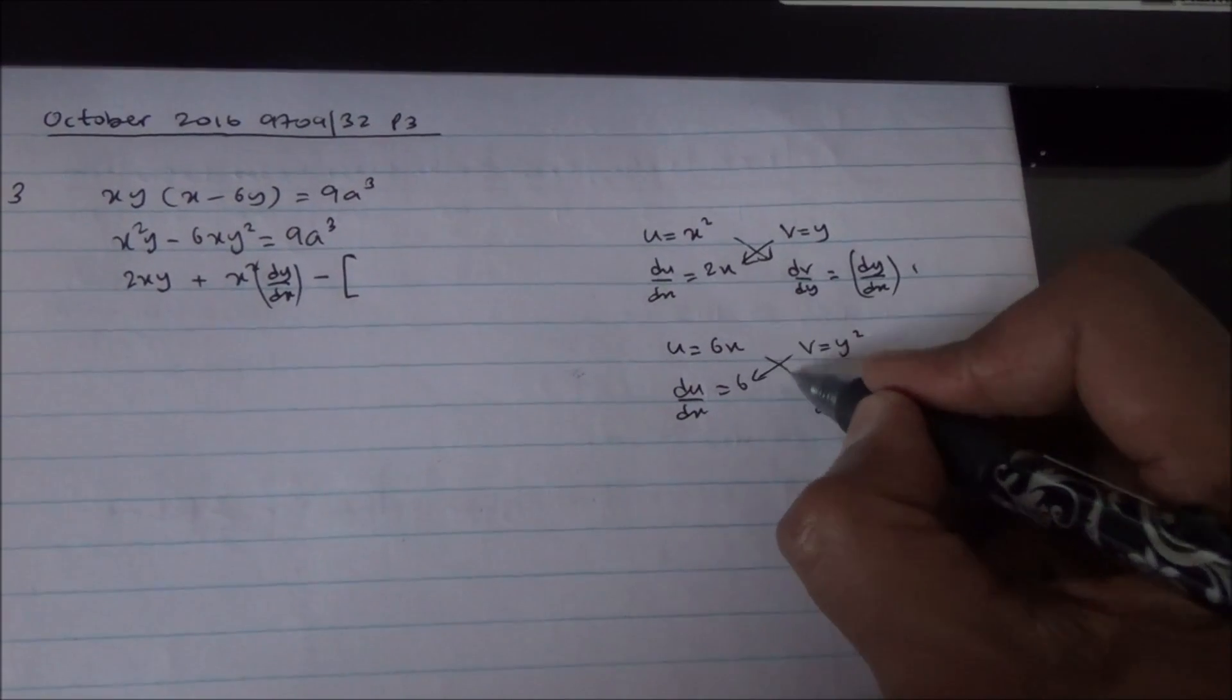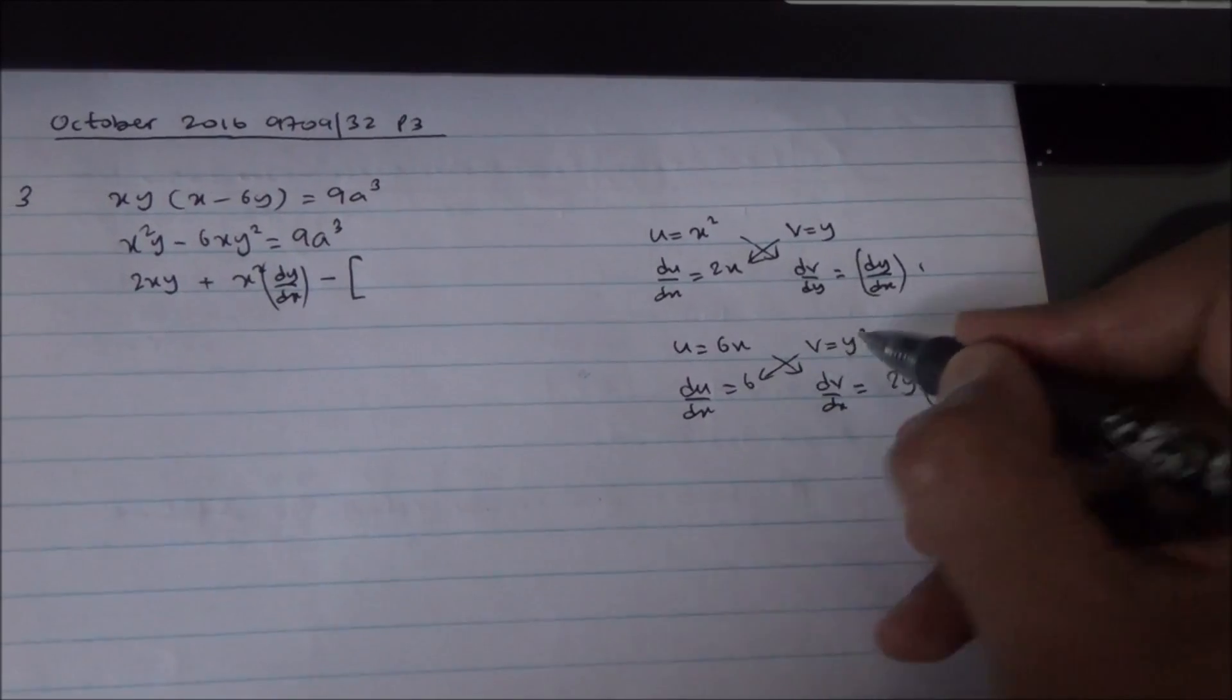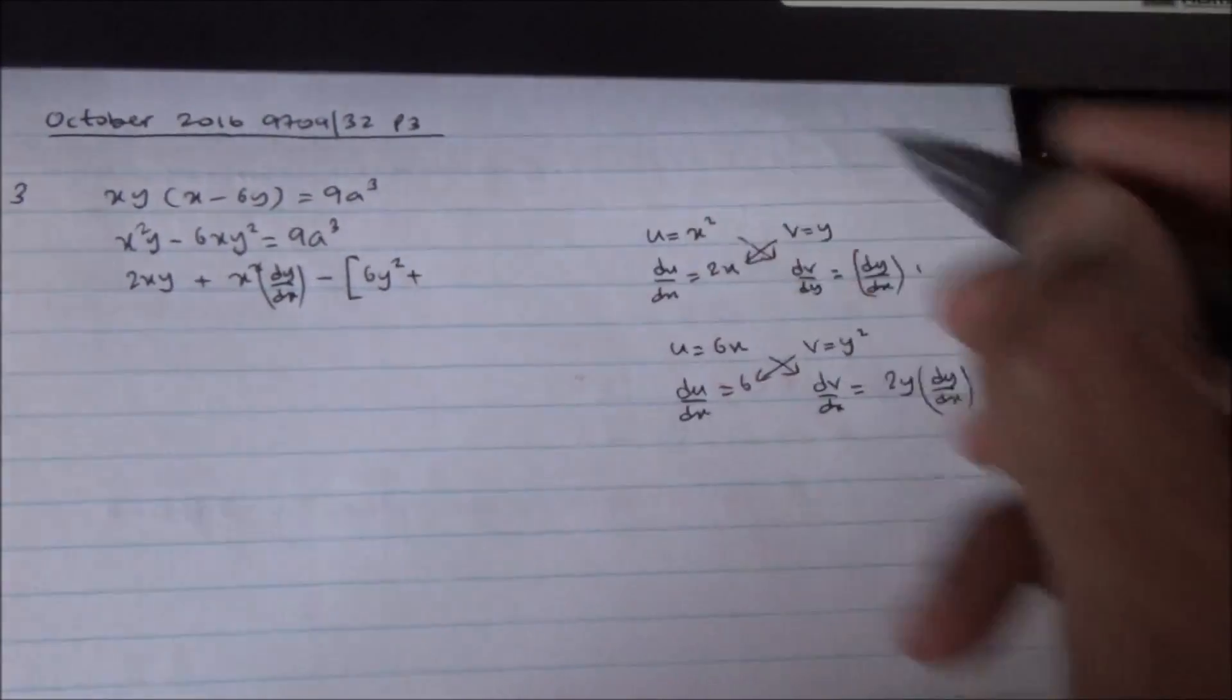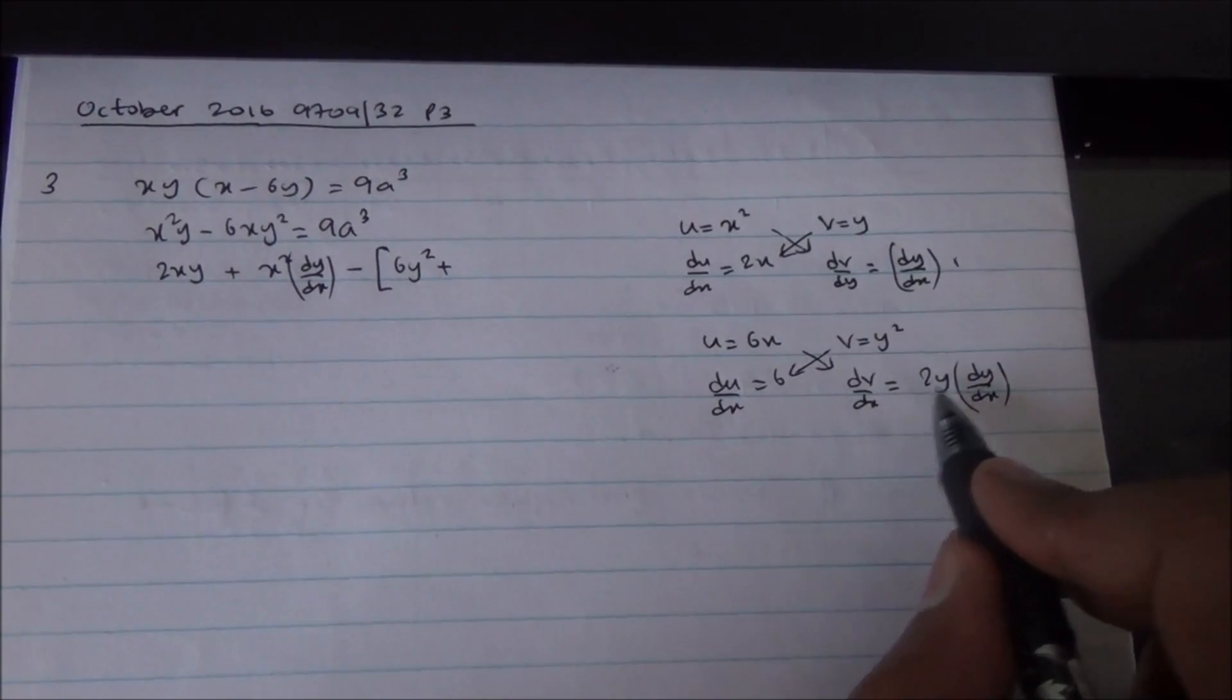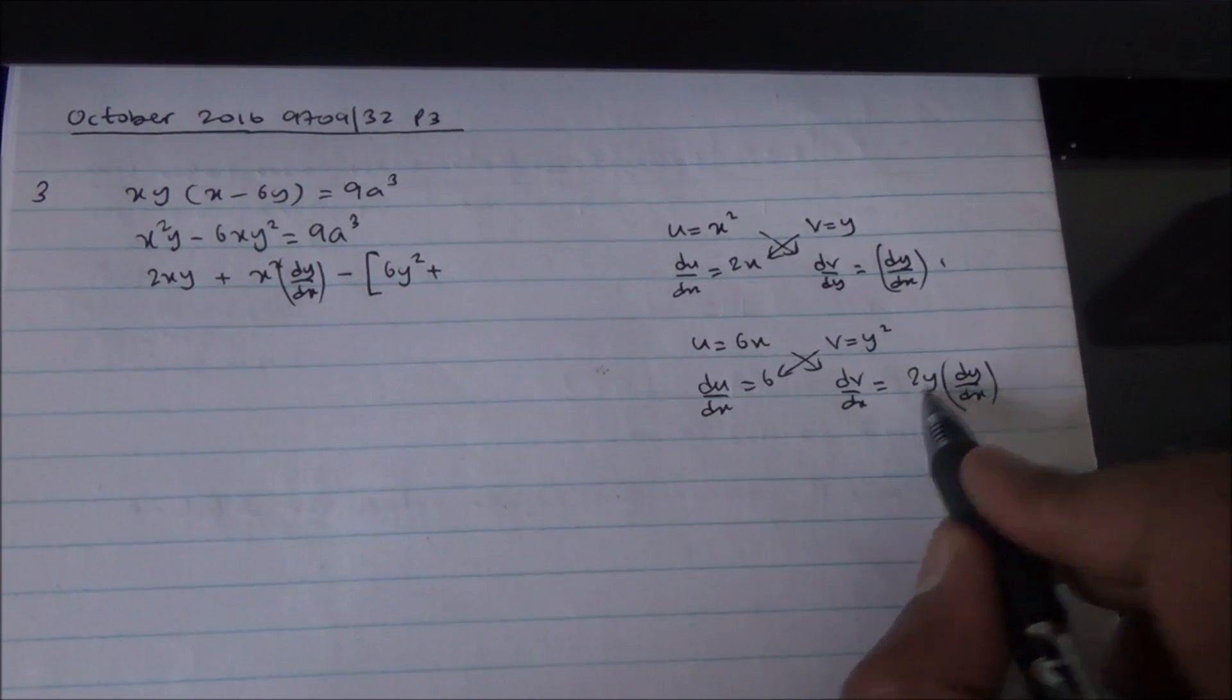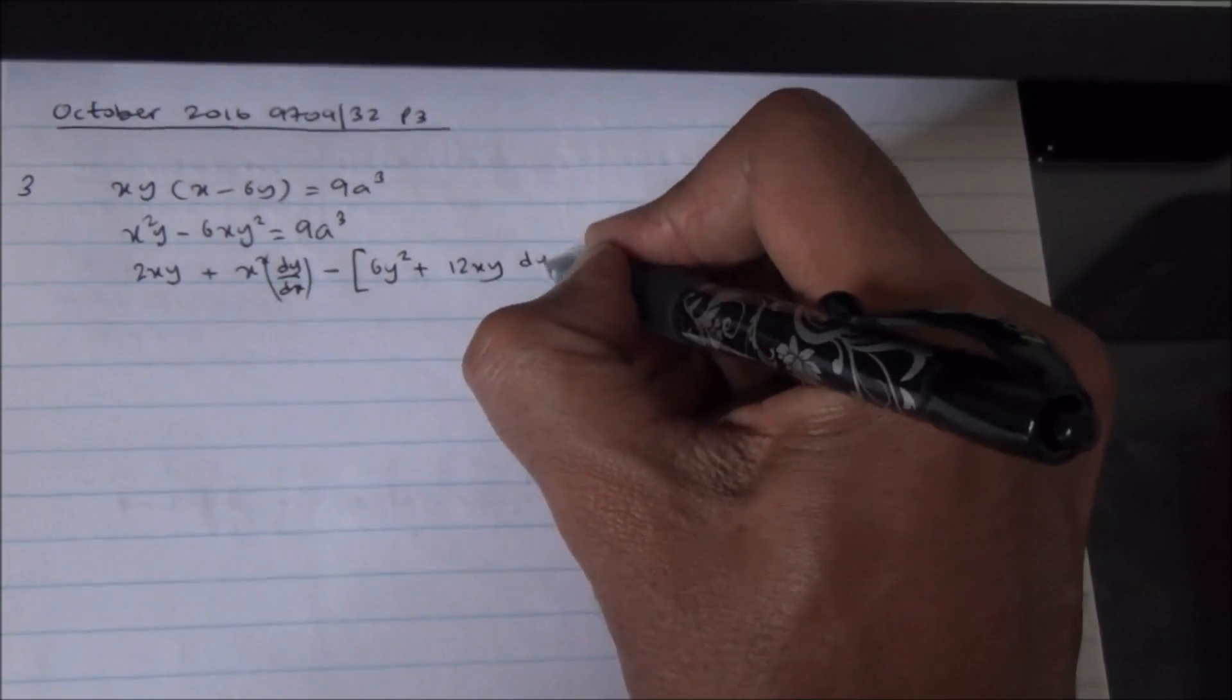So, again, the same story, v du by dx, 6 times y squared is going to be 6y squared, plus u dv by dx. u is 6x, dv by dx is 2y dy by dx. So, 6x times 2y is going to be 12xy, not to forget the dy by dx.